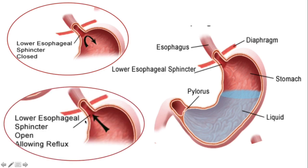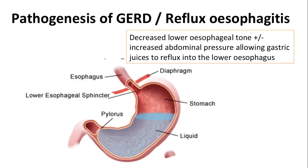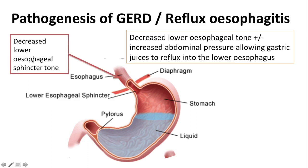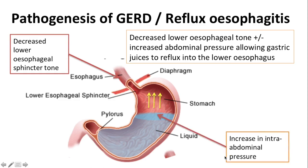The pathogenesis of gastroesophageal reflux disease is really dependent on decreased lower esophageal tone, with or without an increase in abdominal pressure, which then allows gastric juices to reflux into the lower esophagus. Decreased lower esophageal tone allows gastric content to move upwards, and an increase in intra-abdominal pressure will push gastric content upwards as well, giving gastric content a freeway into the esophagus.